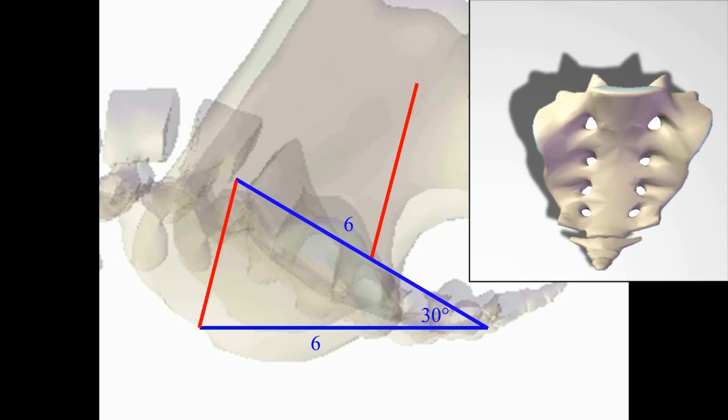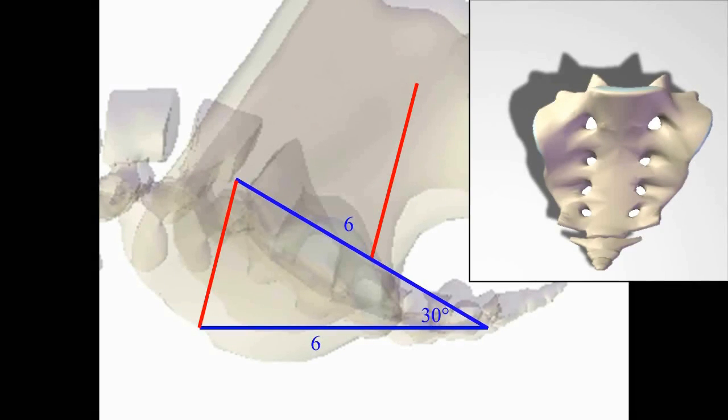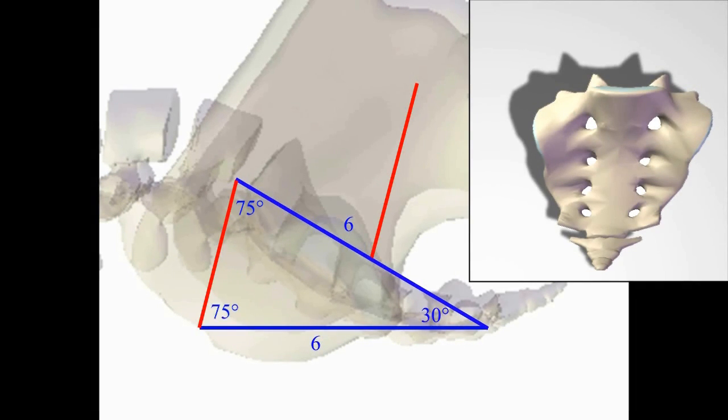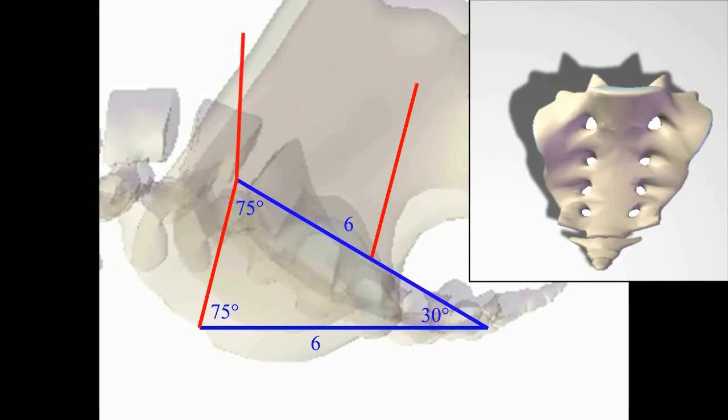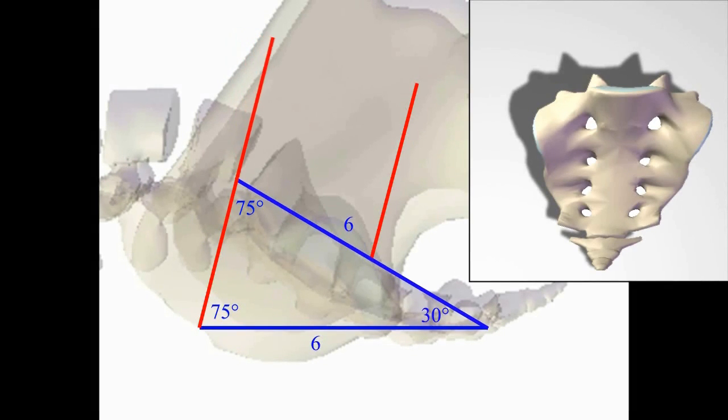Well, if the first angle is 30 degrees and the sum total of the angles is 180, and the other two angles are the same, then all we have to do is subtract the 30 degrees from the 180, leaving us with 150, and split that in half. So each angle here and here is 75 degrees, or ta-da, 15 degrees from a vertical beam.